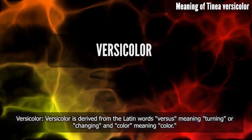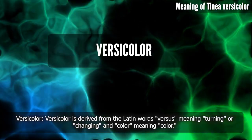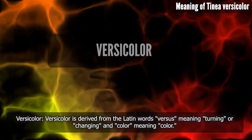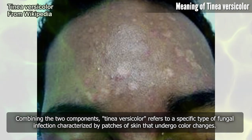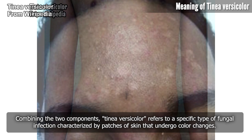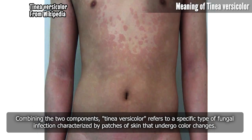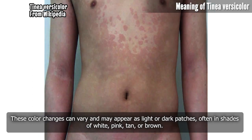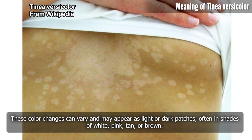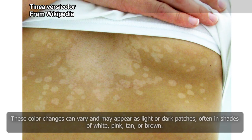Versicolor is derived from the Latin words versus, meaning turning or changing, and color, meaning color. Combining the two components, tinea versicolor refers to a specific type of fungal infection characterized by patches of skin that undergo color changes. These color changes can vary and may appear as light or dark patches, often in shades of white, pink, tan, or brown.